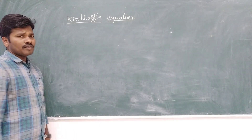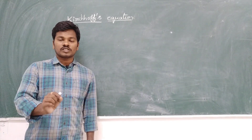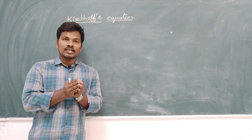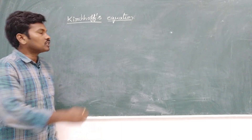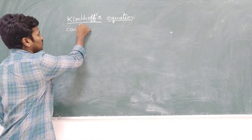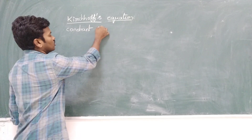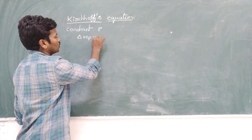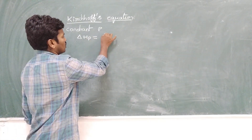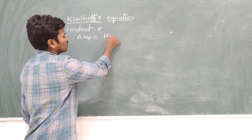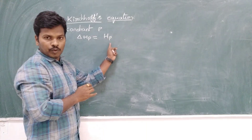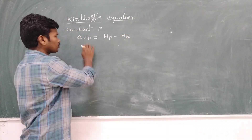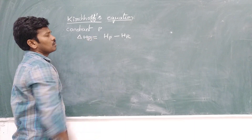Consider a chemical reaction at a constant pressure. We have to calculate the enthalpy change at a constant pressure. Our condition is: at a constant pressure, the change in enthalpy is equal to the enthalpy change of the products minus the enthalpy change of the reactants. Here P denotes constant pressure.